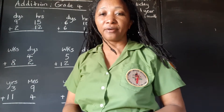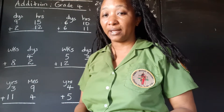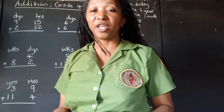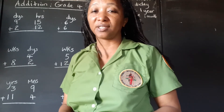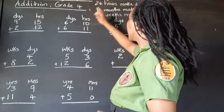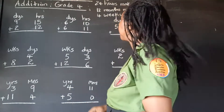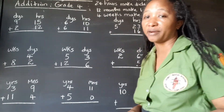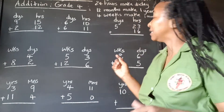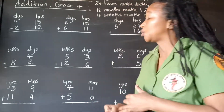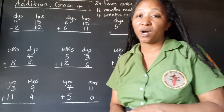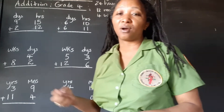Now the important thing to remember when we're adding months, days, weeks, hours, and so on — we need to know first of all how many of each unit makes the other unit. So: 7 days make 1 week, 24 hours make 1 day, 12 months make 1 year, 4 weeks make 1 month.